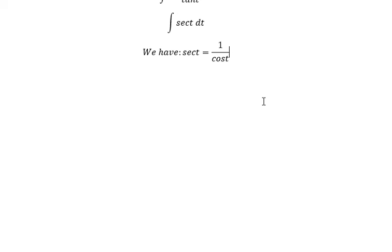We have secant t equal to 1 over cosine t. We multiply with cosine t on numerator and denominator.